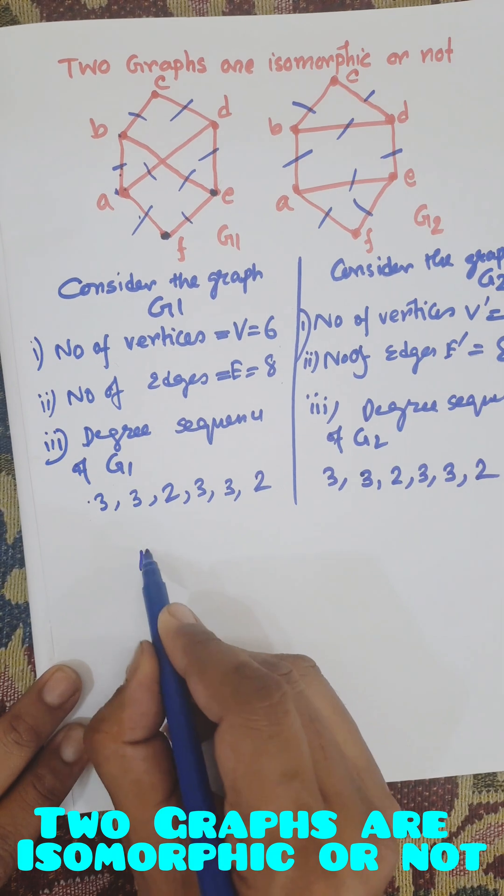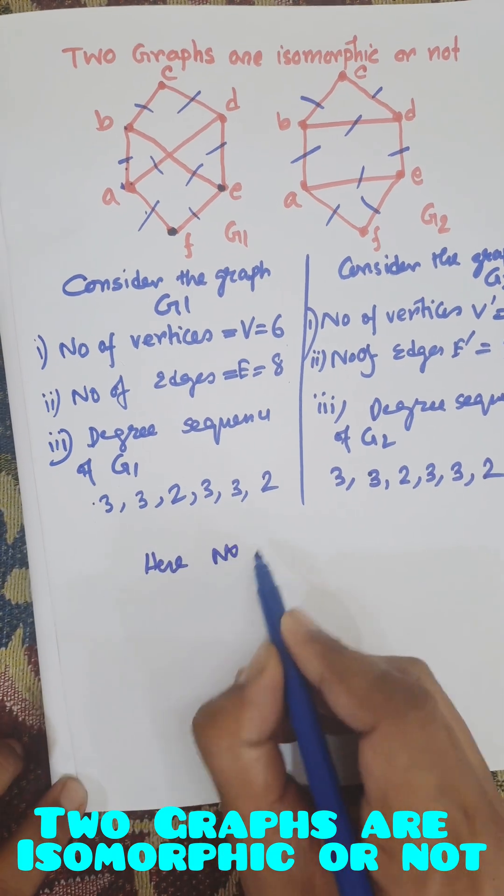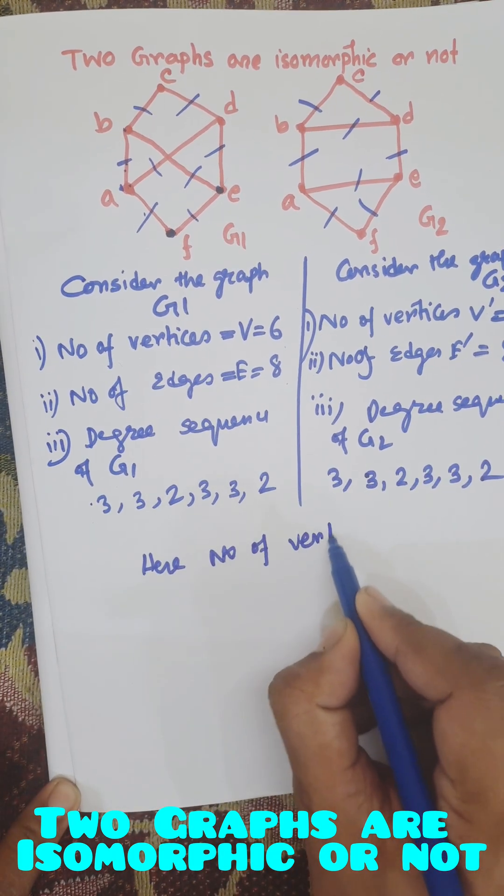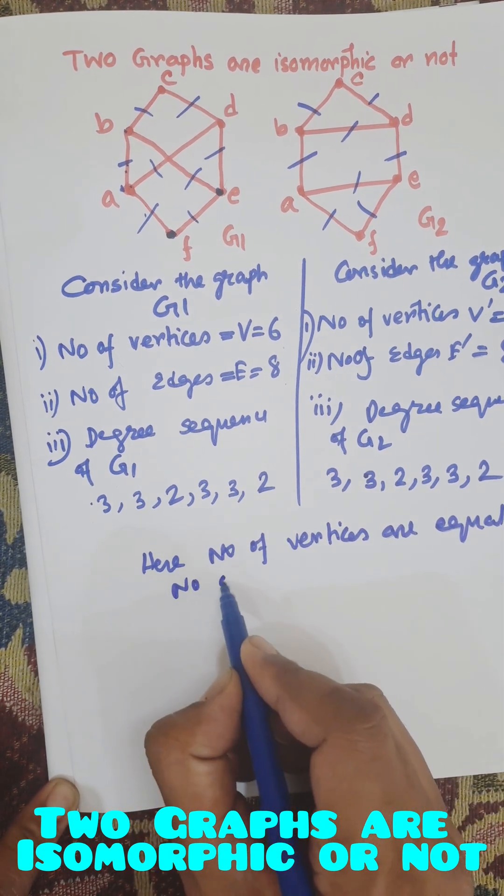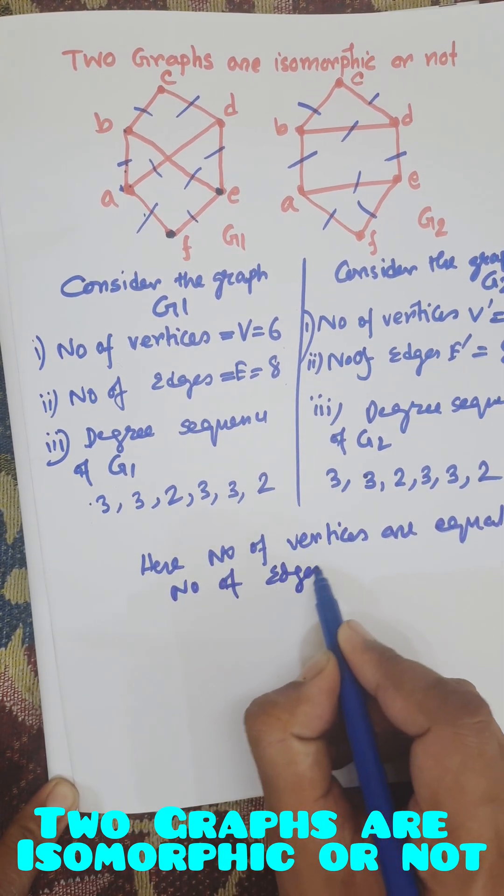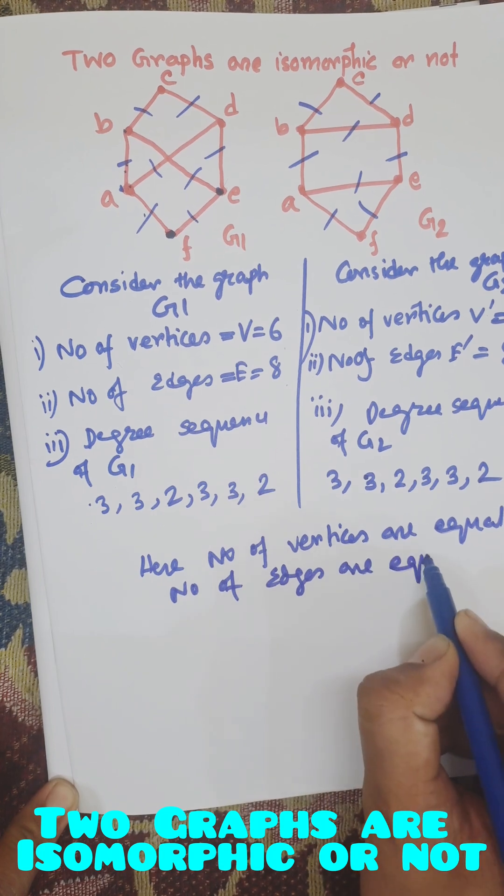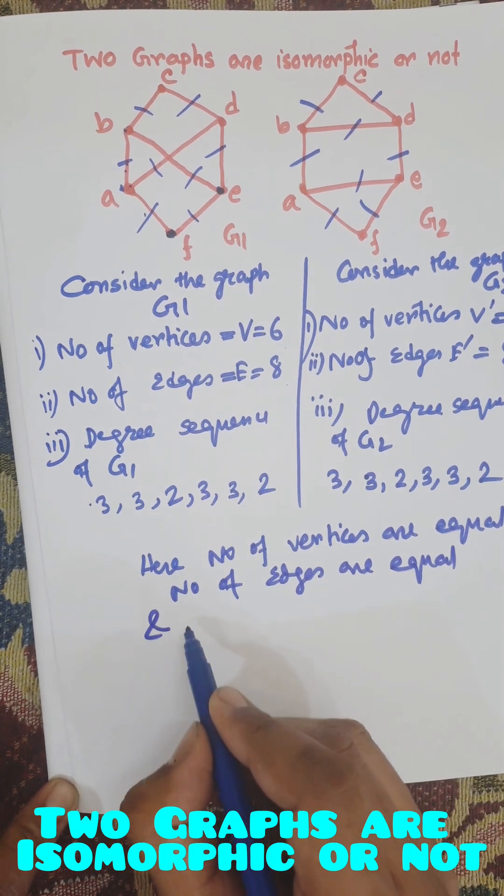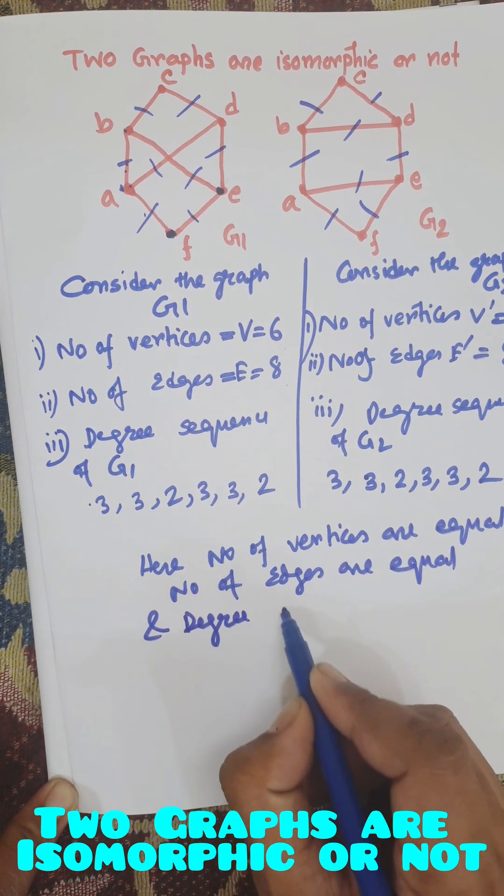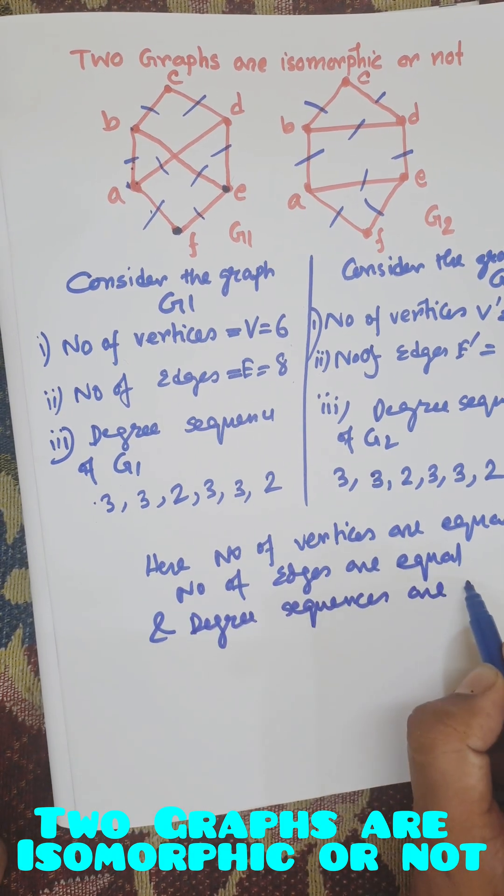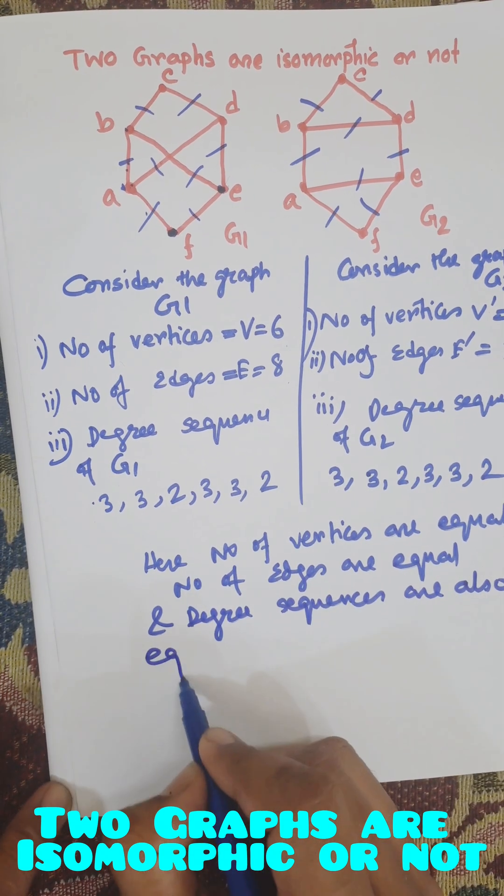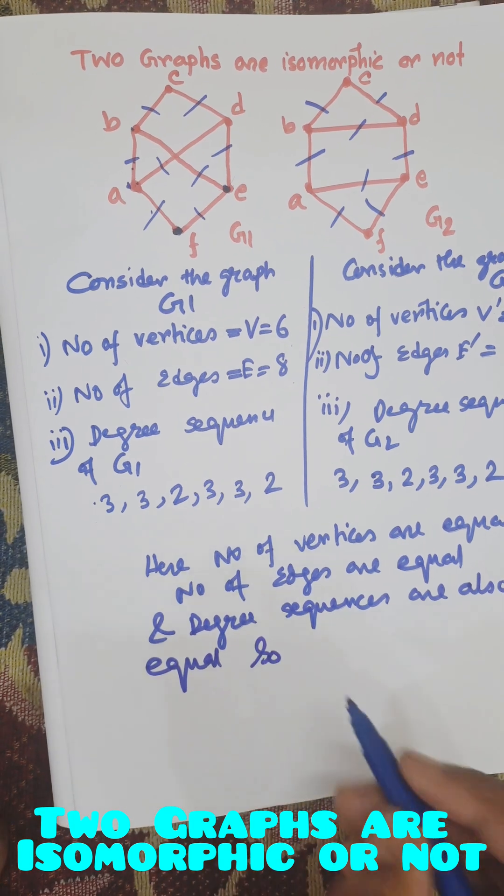Here number of vertices are equal, number of edges are equal, and degree sequence are equal.